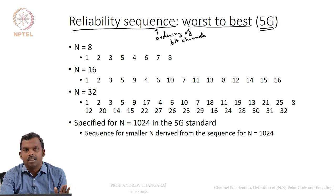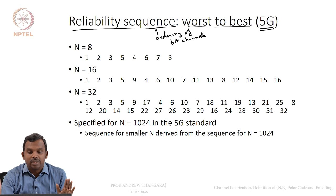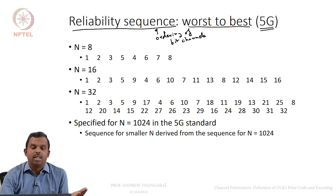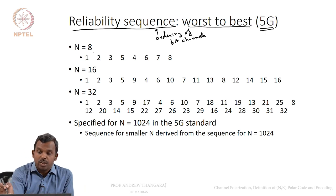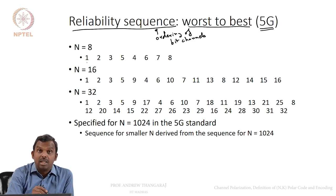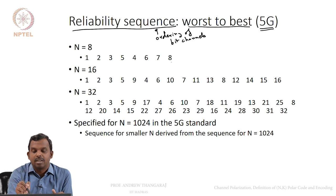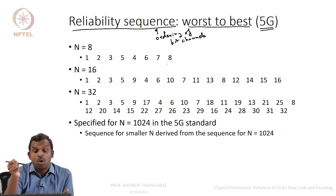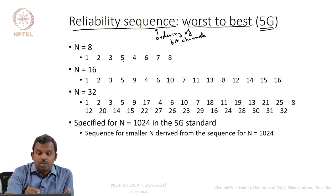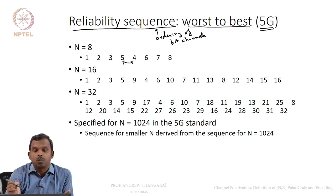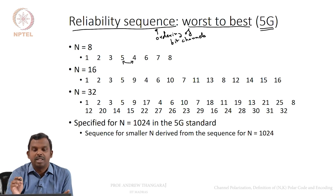We will simply provide the final answer for the reliability sequence. For N equals 8, according to the 5G standard, the reliability sequence is: 1, 2, 3, 5, 4, 6, 7, 8. Bit channel 1 is the worst, followed by 2, 3, 5, then 4, then 6, 7, 8. It is not in the same order as 1, 2, 3, 4, 5 — the 4th bit channel is better than the 5th bit channel according to this ordering.